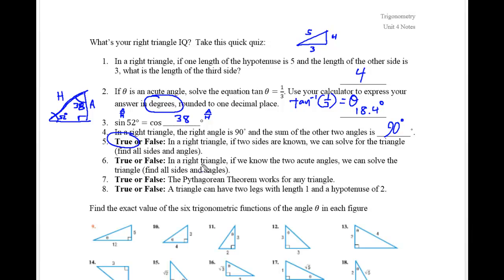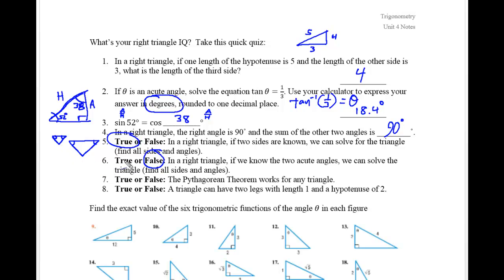True or false: in a right triangle, if we know the two acute angles, we can solve the triangle. That's false. Knowing the angles doesn't fix the size of the sides. For example, given just two angle measurements, you could have three different-sized triangles with the same angles. So two angles are not sufficient to determine all three side lengths, though knowing two angles lets us find the third angle.